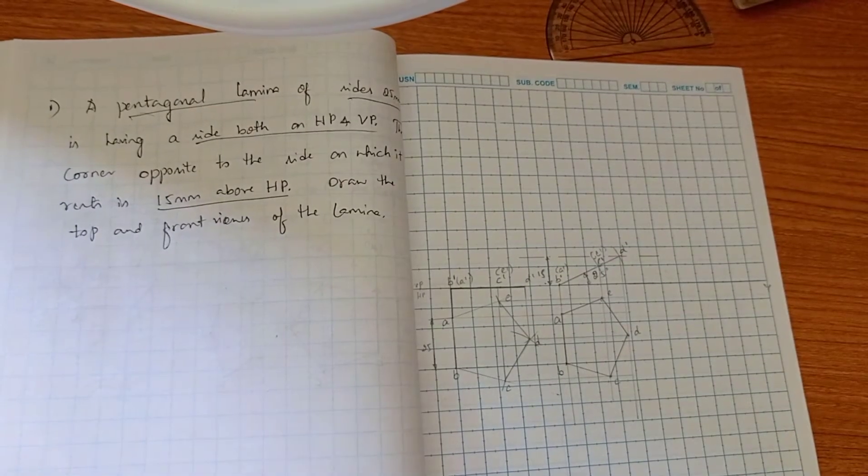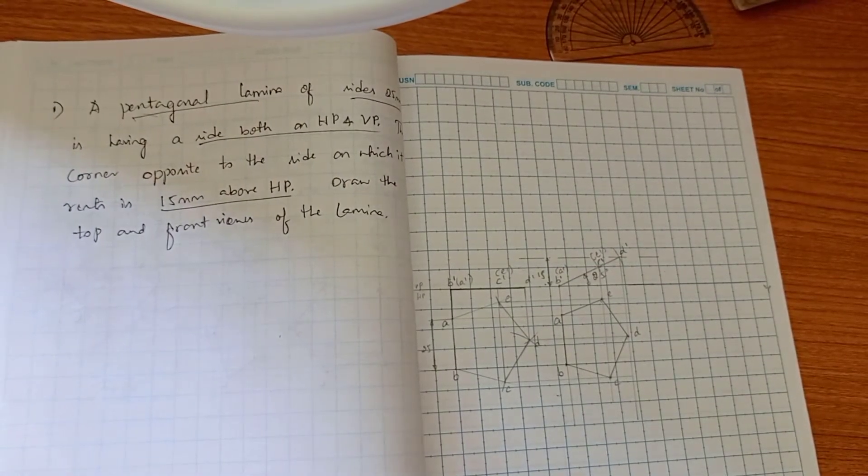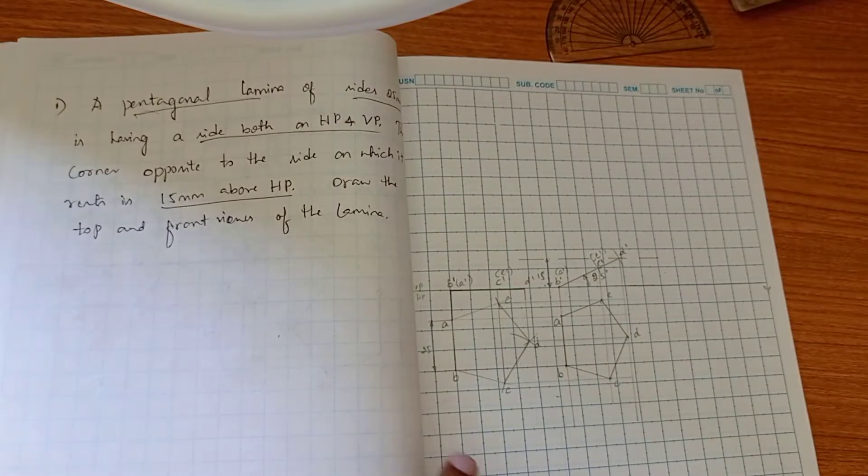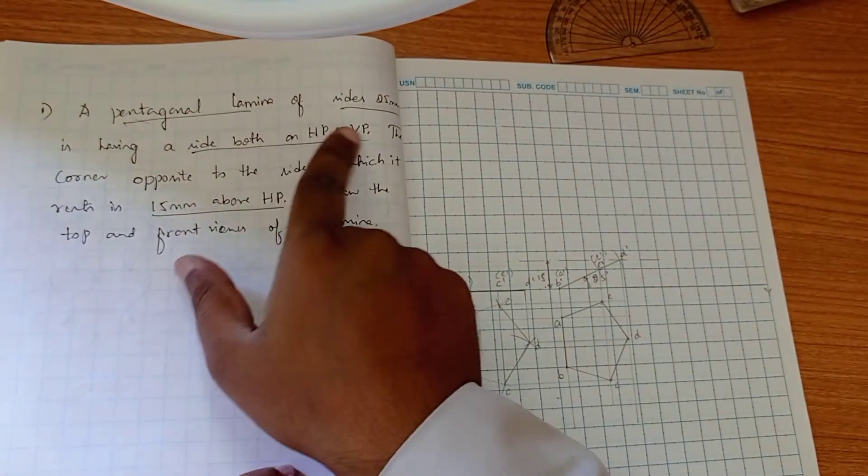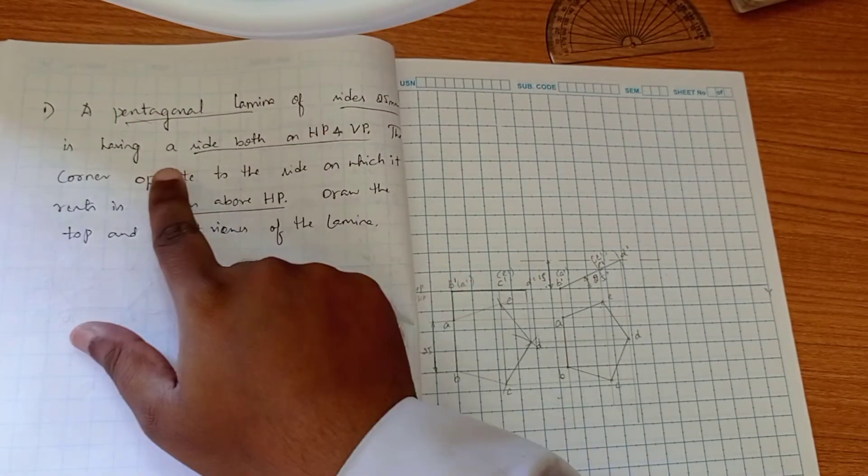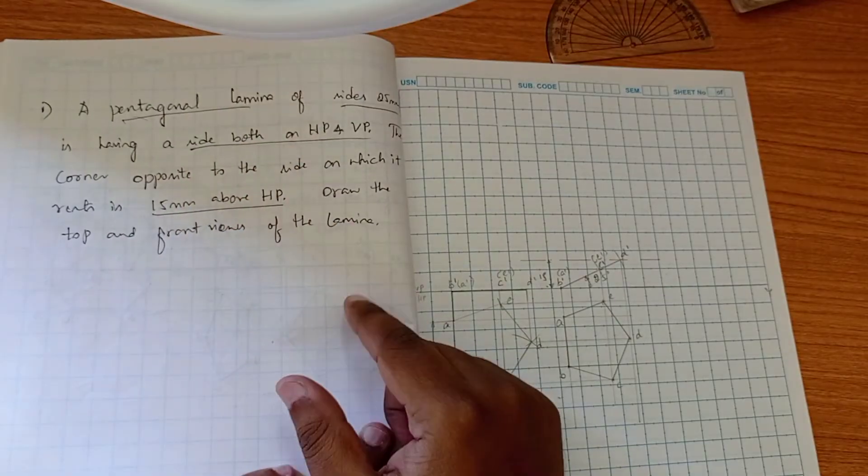Good morning, we see another type of problem in pentagonal lamina. In this question, a pentagonal lamina of dimension 25 is having a side both on HP and VP.